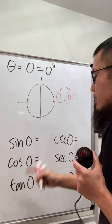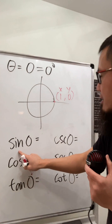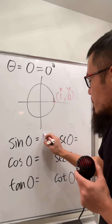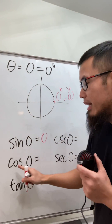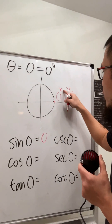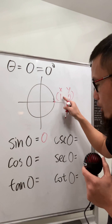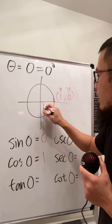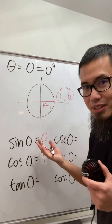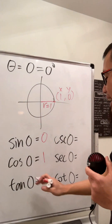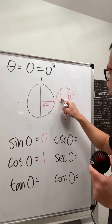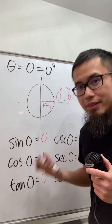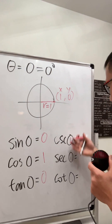Sine is the y-value on the unit circle, so sine of 0° = 0. Cosine is the x-value, which is 1. Since r = 1, dividing by r doesn't change anything. Tangent is y over x, which is 0 over 1 = 0.